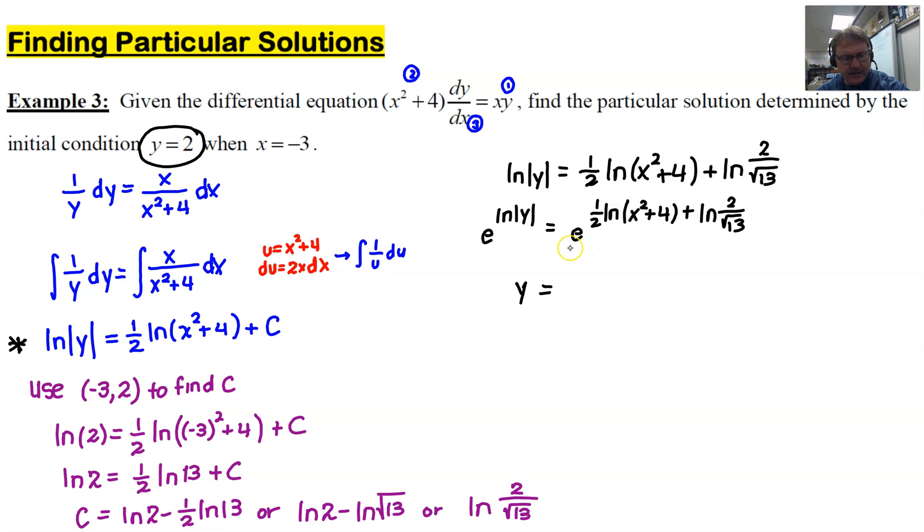So y is our result there. And then over here, we're going to do a couple of things. I'm first of all going to rewrite this 1/2 exponent as the power of the x² + 4, which could be the square root. And then instead of adding another exponent piece, I'll multiply by e to the ln of 2 over radical 13. I'm basically splitting this plus in my exponent as a multiplication with two like bases.